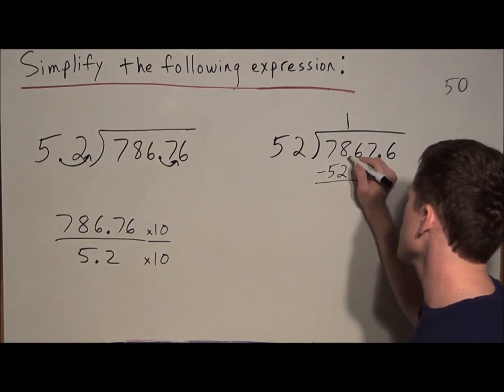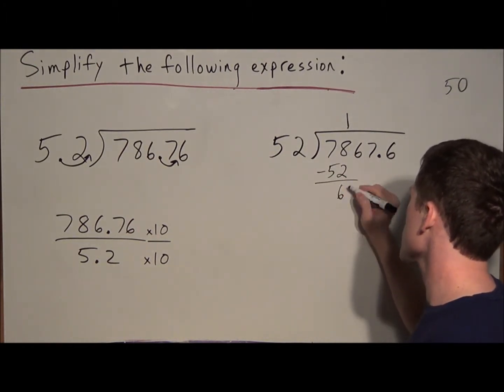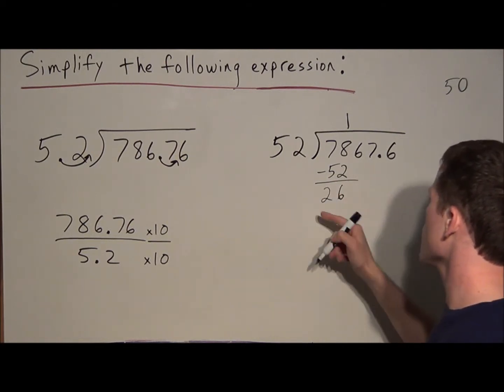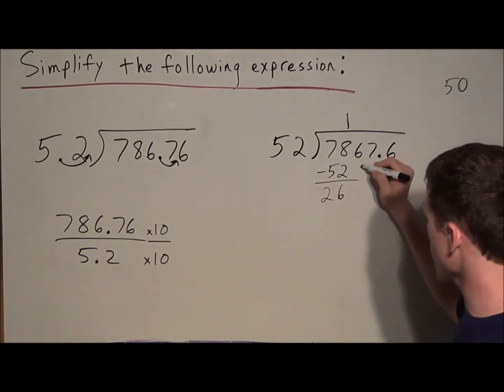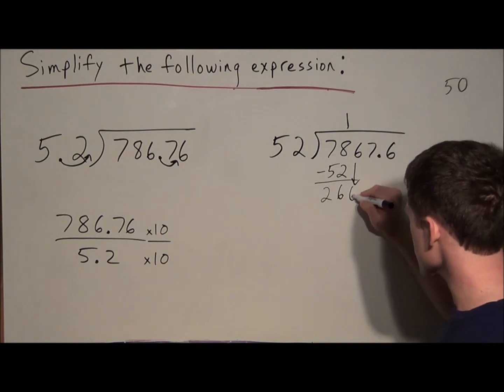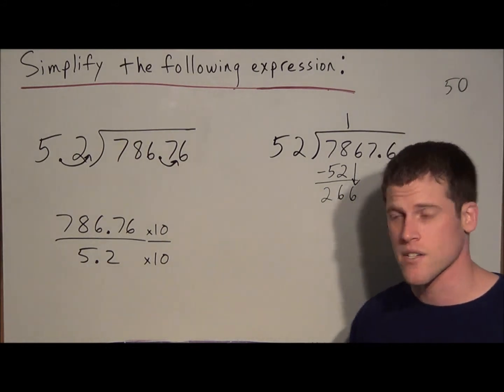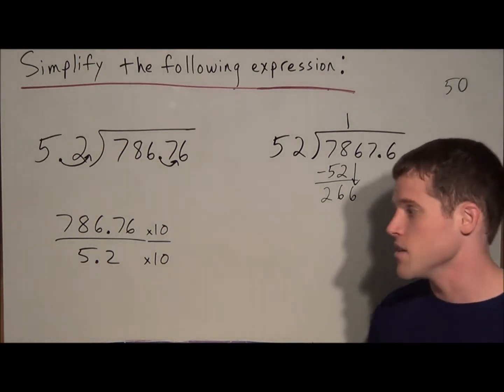So we subtract 52, 8 minus 2 is 6, 7 minus 5 is 2, and we have a remainder of 26. But now we have to carry down this 6, and we have 266. But this is where, like I said, the estimation comes in.